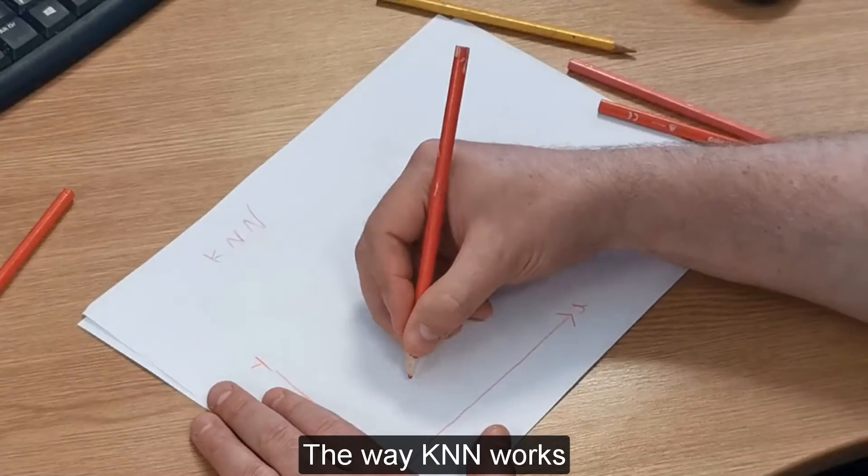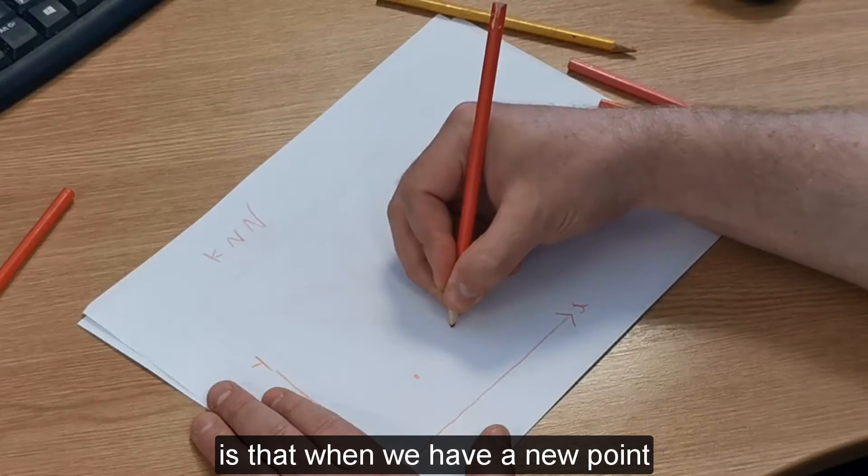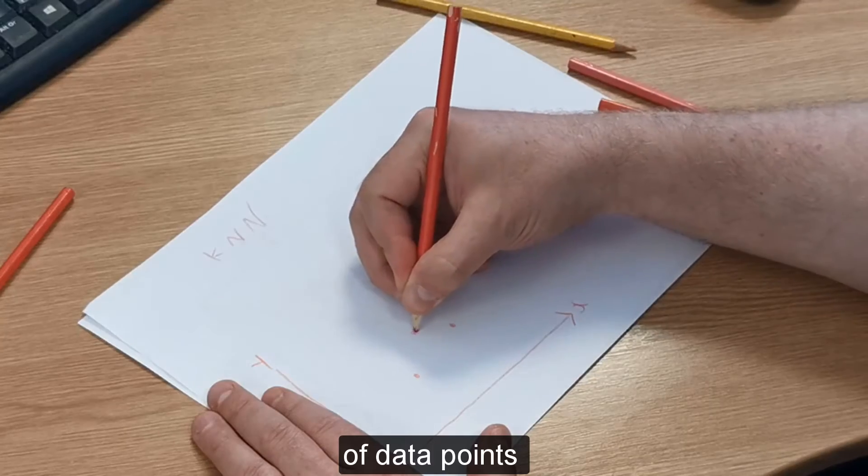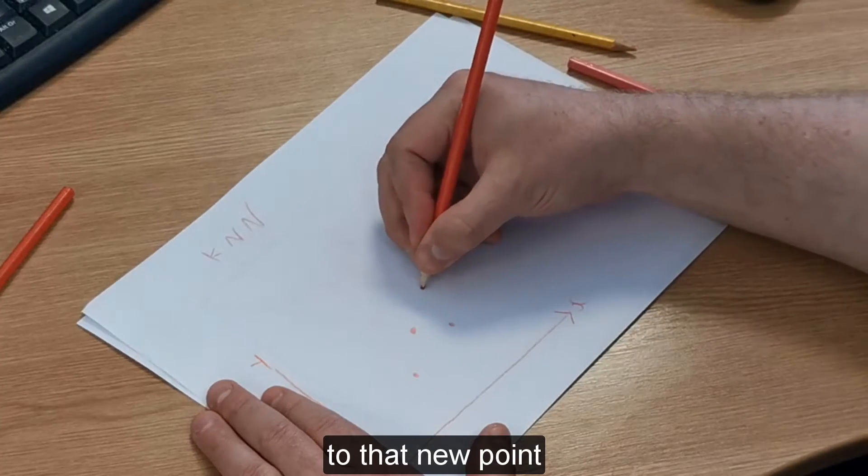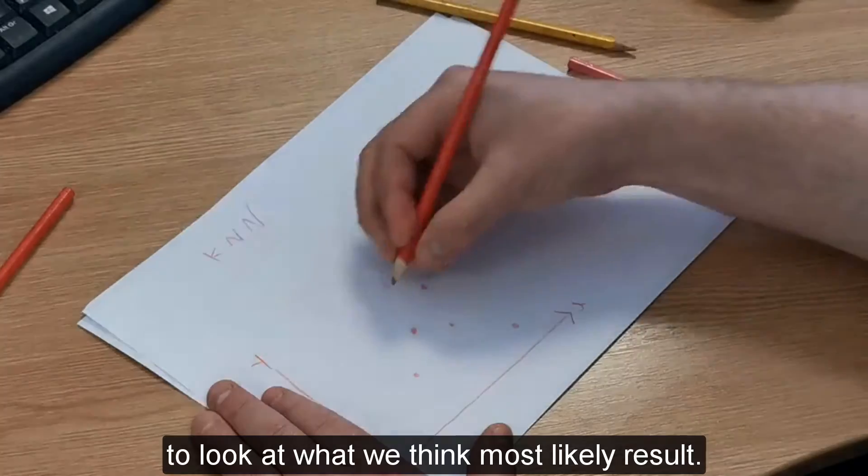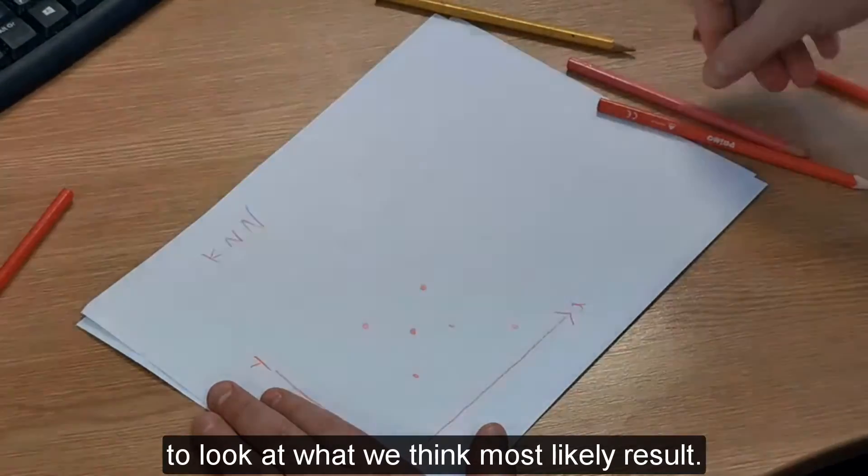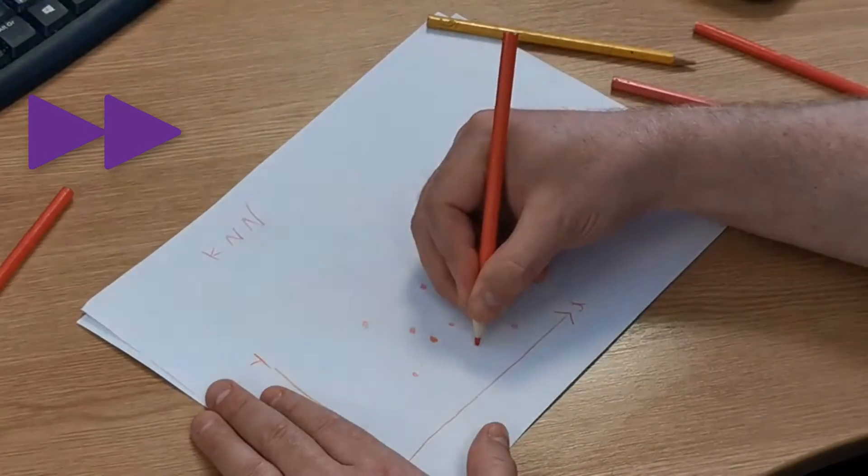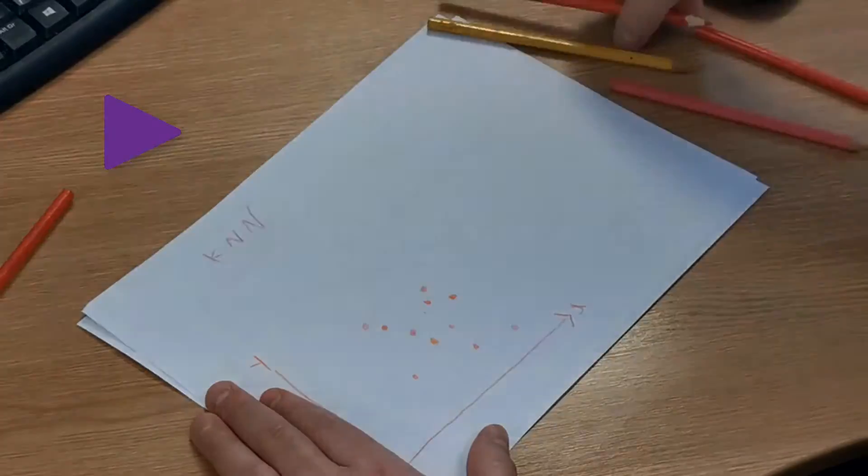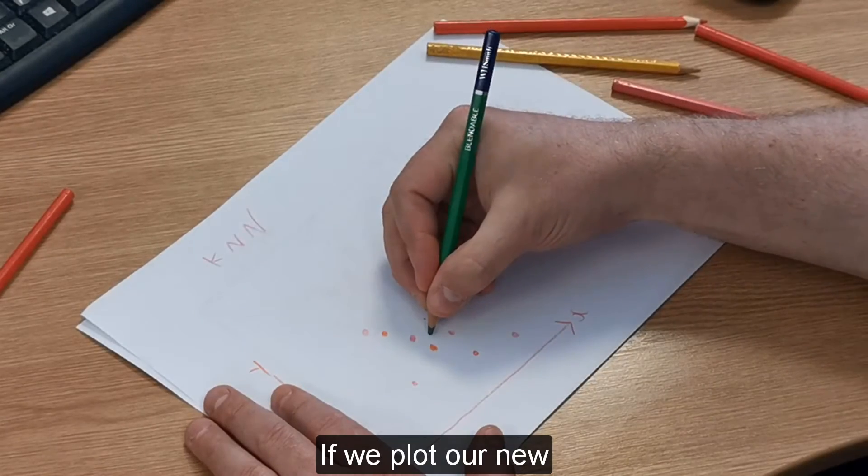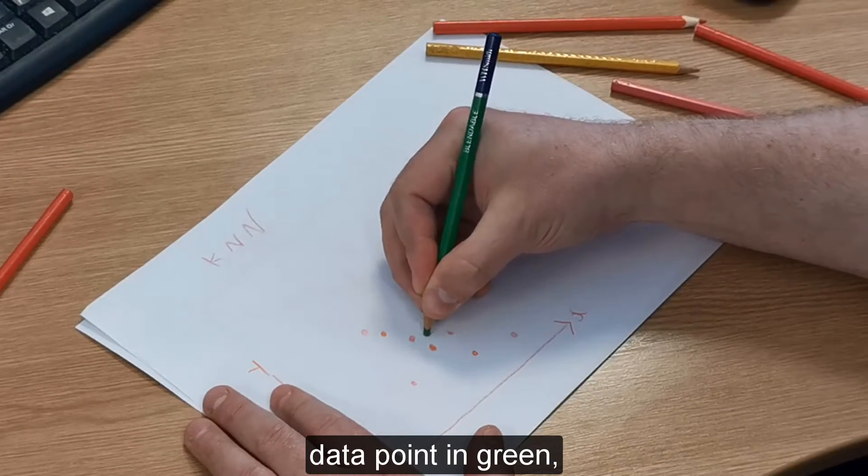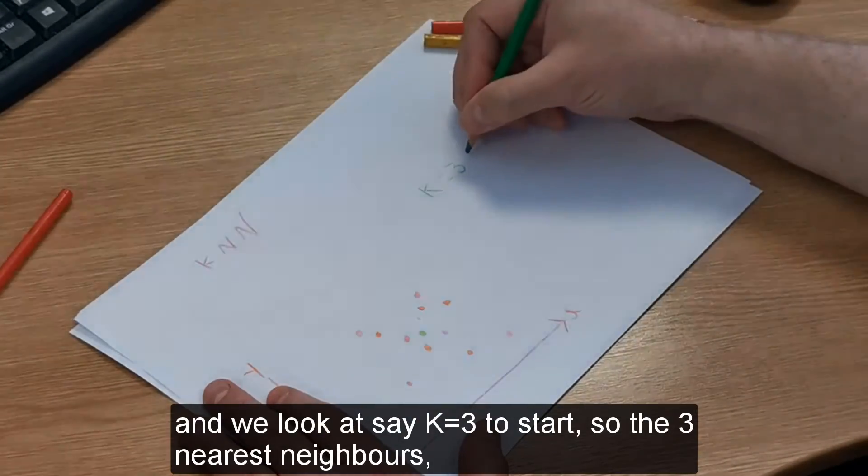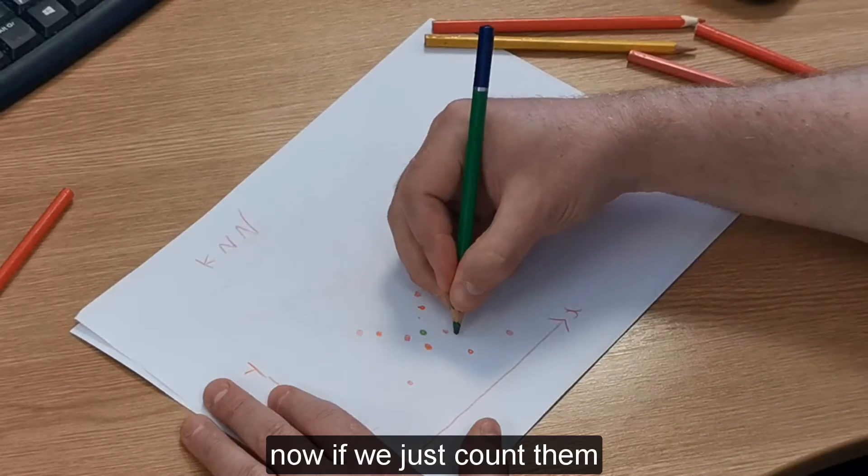I will plot some data points from two different classes. The way K-Nearest Neighbor works is that when we have a new point, we count the nearest data points to that new point to look at what we think is the most likely result. If we plot our new data point in green and look at k equals three to start, we're looking at the three nearest neighbors.